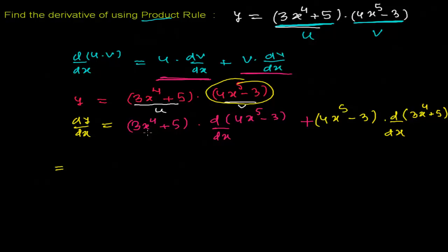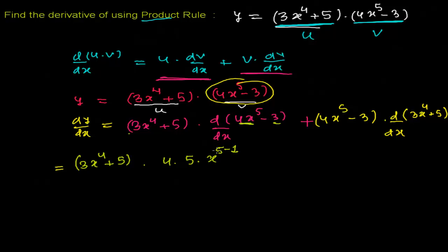Now let's solve it. I'm going to write the first function (3x to the power 4 plus 5) as it is, and now I need to find the derivative of (4x to the power 5 minus 3). Since 4 is a constant, I write 4 as is, and applying the power rule to x to the power 5: bring the power down and reduce the power by 1, giving 5 times x to the power 4. The derivative of the constant 3 is 0.